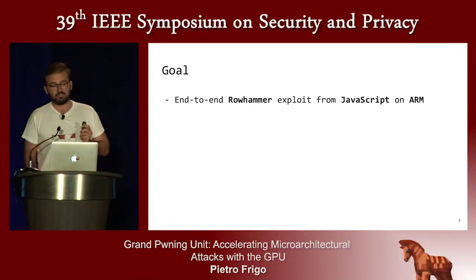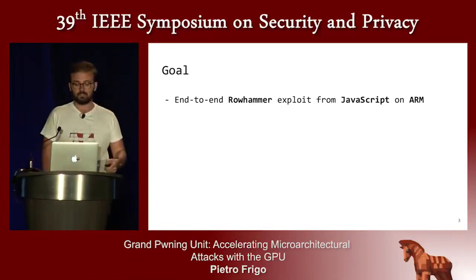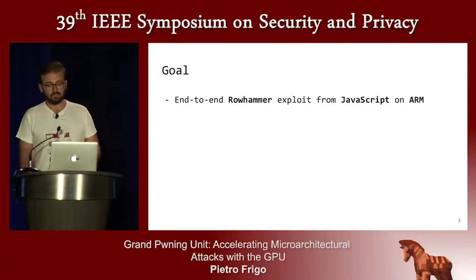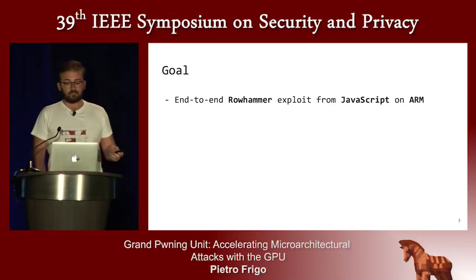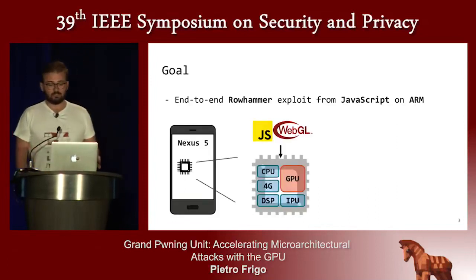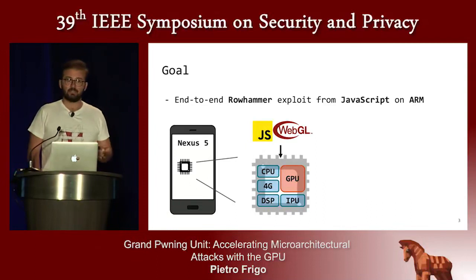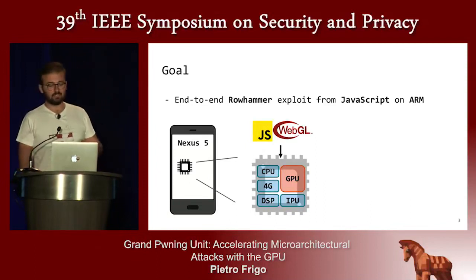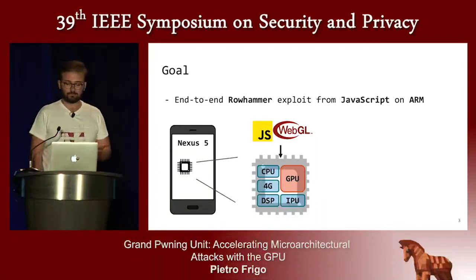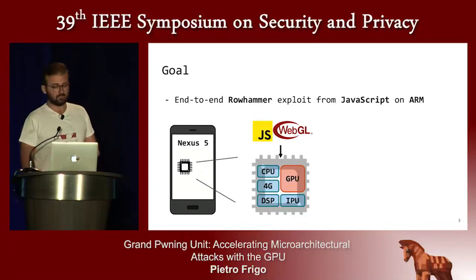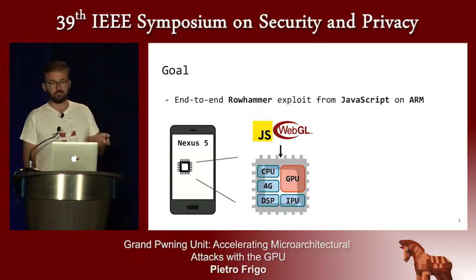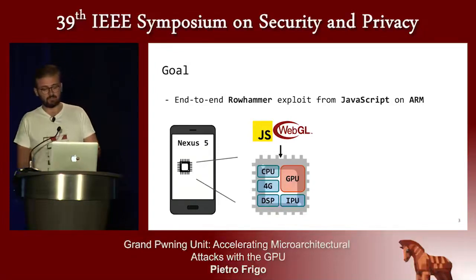The result is that we can finally implement an end-to-end rowhammer exploit from JavaScript, and we can do this even on the more challenging ARM platforms. The goal of this presentation is to introduce you to our end-to-end exploit and guide you through how we built it. The threat model is an Android smartphone and a website where an attacker has control and can run their own WebGL code on the GPU. Our test device was a Nexus 5.